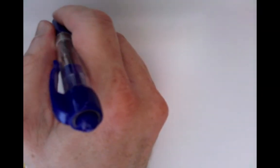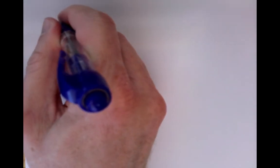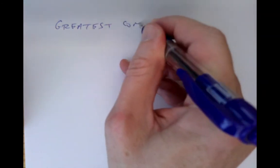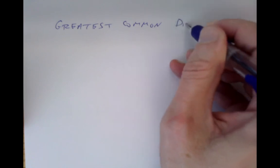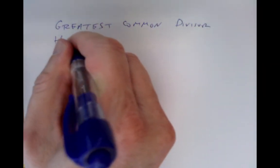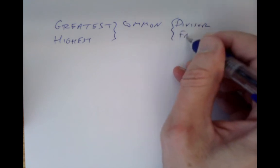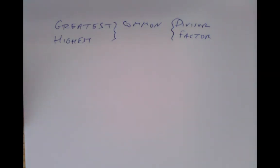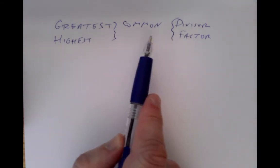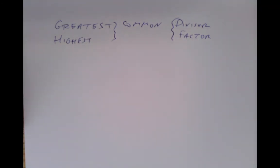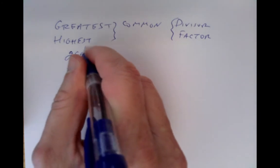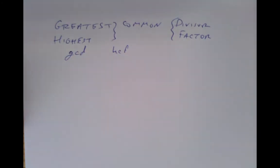Now we want to think about how we can use these ideas of quotient and remainder to study not just one integer but a whole bunch of them. We'll start off with greatest common divisors. The word 'greatest' is also sometimes written as 'highest', and 'divisor' is sometimes called 'factor' — so it could be greatest common divisor, highest common divisor, or highest common factor. I'll always say greatest common divisor and write it as GCD.